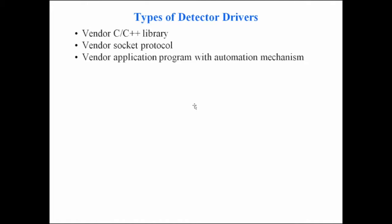Now I'll talk about drivers. There are really three different types. If you're writing a new one, the best approach is to find one using the same mechanism as what you want to write. The three models are: the vendor provides a C or C++ library you call; the vendor gives you a socket server with a defined socket protocol; or the vendor gives you an application program with some way to automate it.